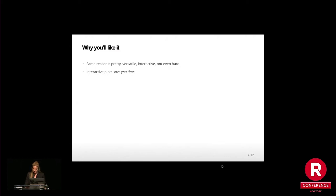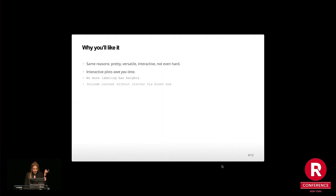Interactive plots save you time — that is one of the biggest things you gain from this. No more labeling bar heights; you can hover over things and it populates with more context without cluttering the space. No more plotting every single combination of comparisons because you can click to turn things on and off. You can allow for zooming — if you have a timeline and they ask for a one-month view, you can do anything you want. Here it is, you can zoom. It's great. Also, people will respect you.